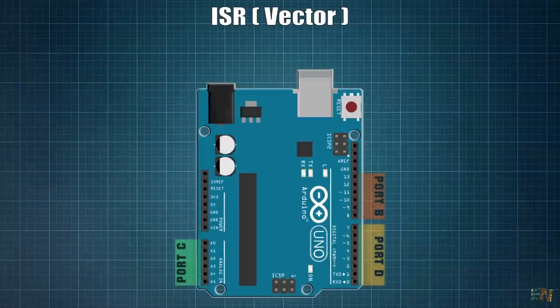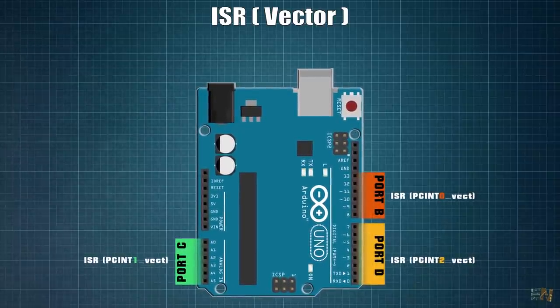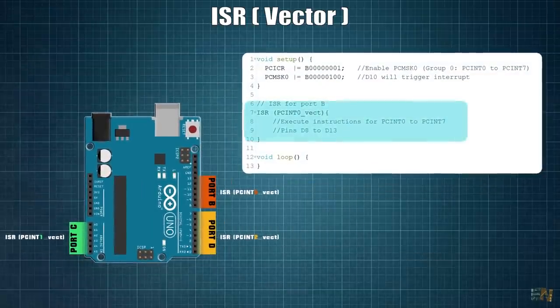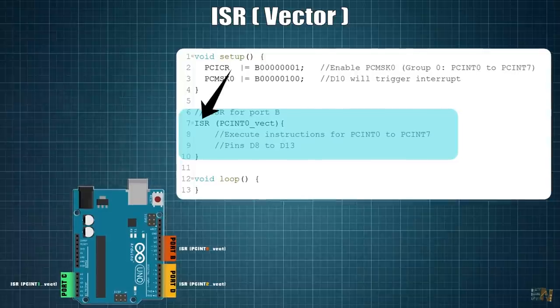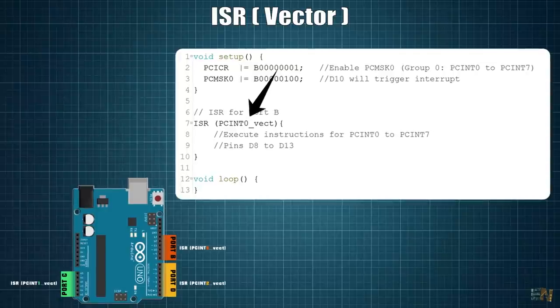So what is this interruption vector? Well, each of the 3 groups of pins will have an ISR, or interrupt service routine. This is a loop in the code that when the interruption flag is triggered it will execute. For that in the code we define the ISR and then we add a vector.